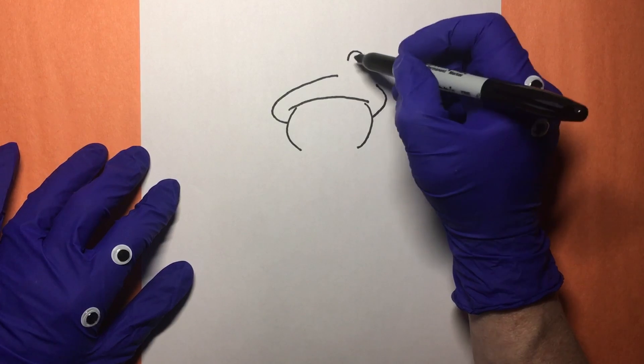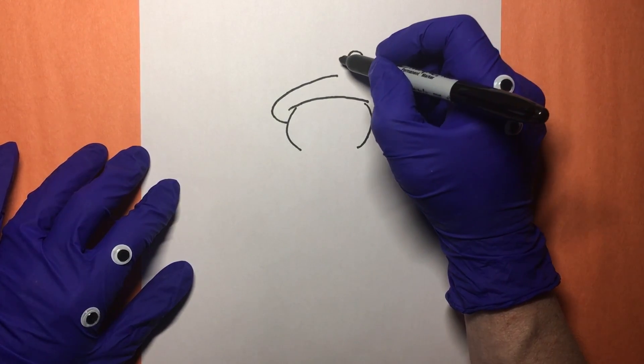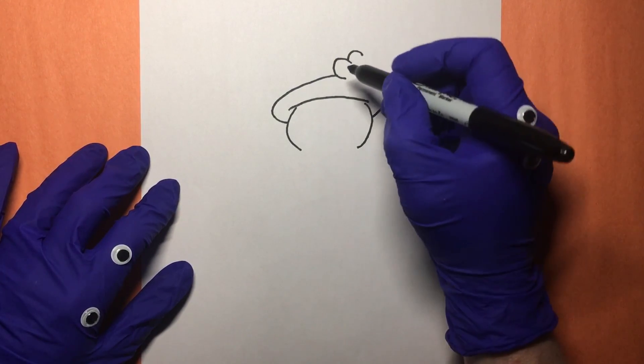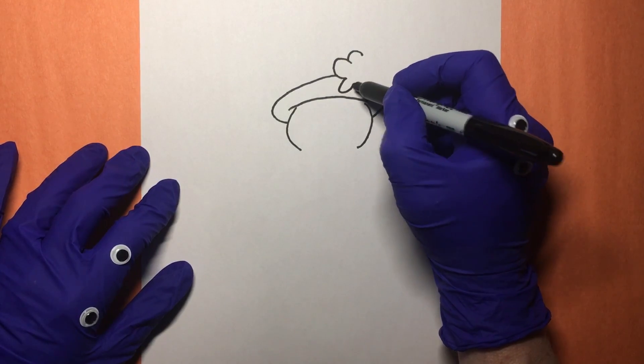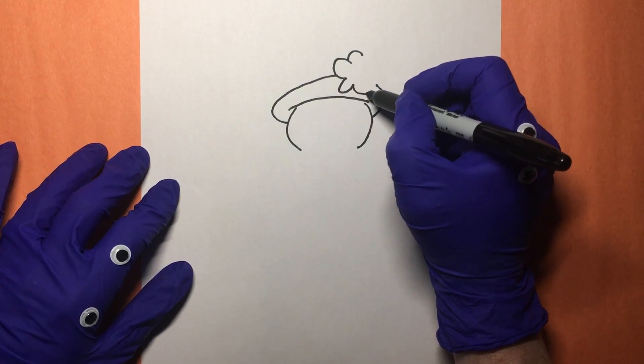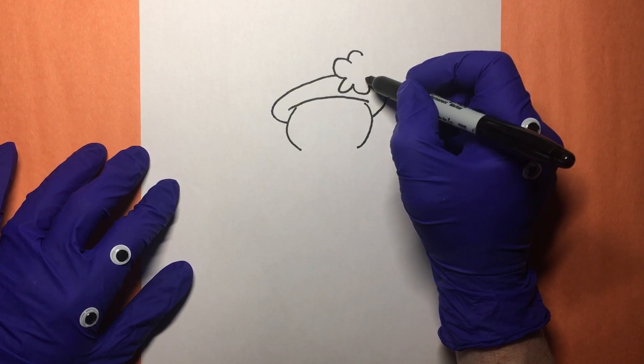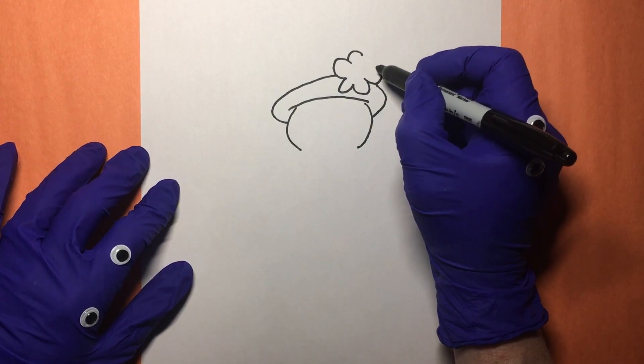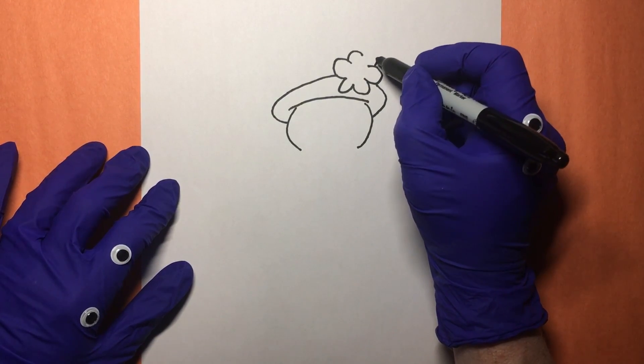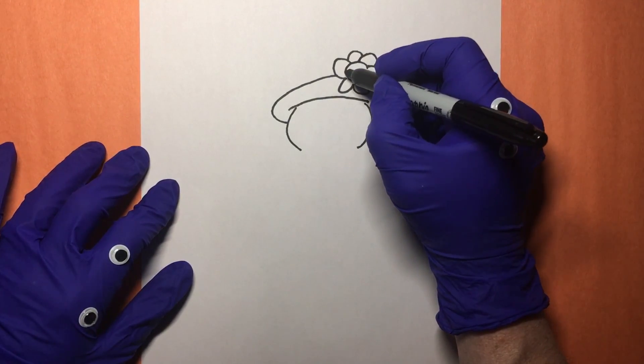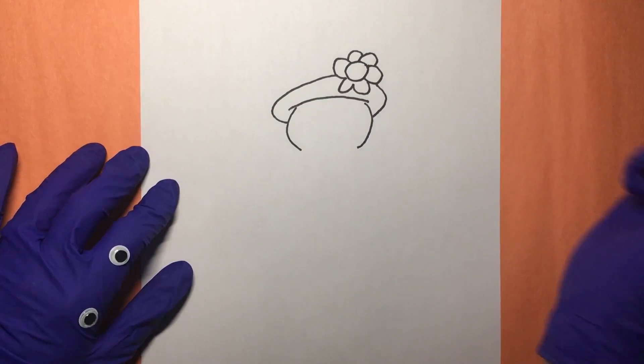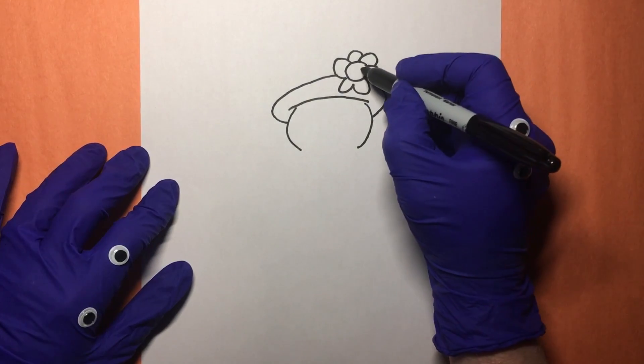Now leave a spot because we're gonna put a nice flower in there. One, two, three, four, five, and six petals. There we go. Now we'll make the middle part of the flower. Perfect.